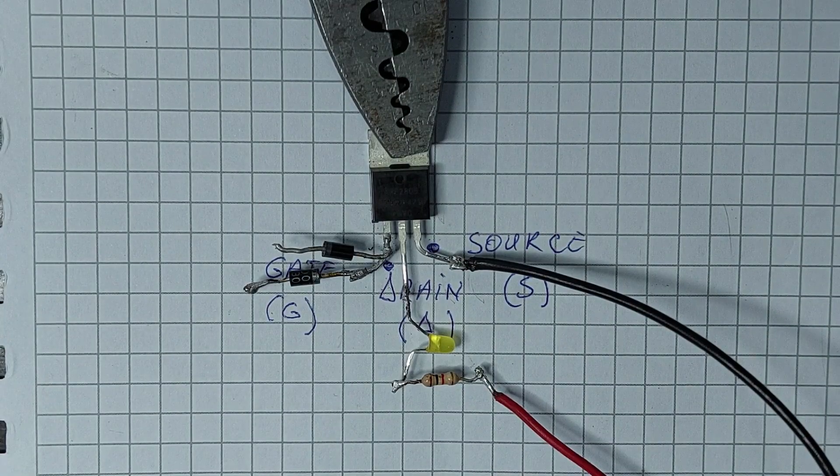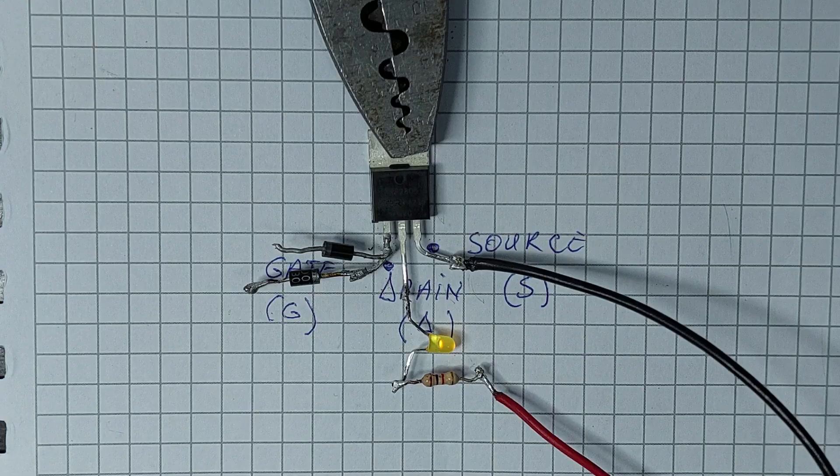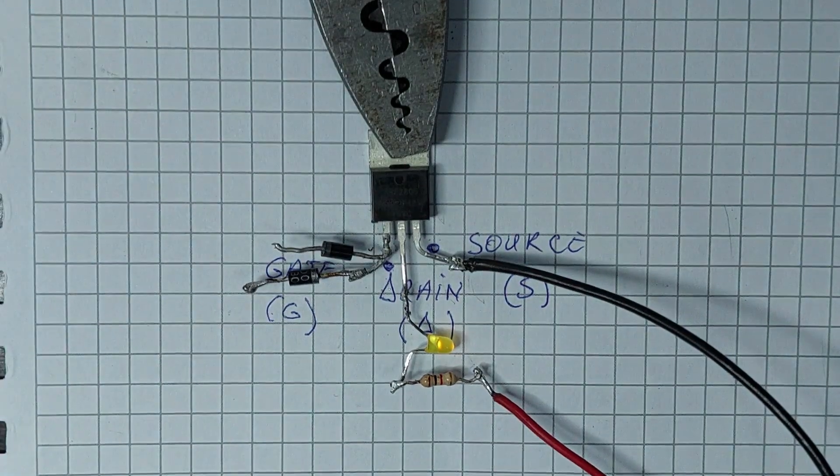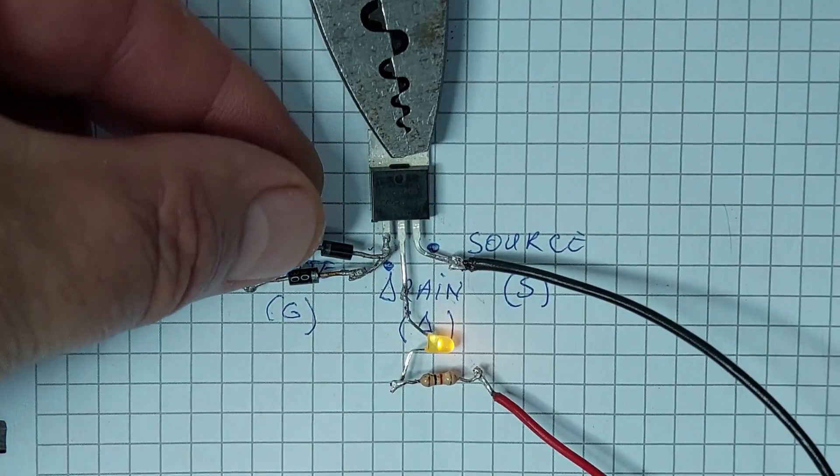Now comes the fun part. By touching the free ends of the diodes one at a time, I can control the MOSFET's gate. Watch closely as the LED lights up or turns off depending on which diode I touch.